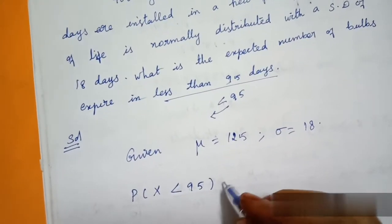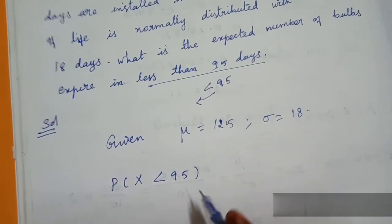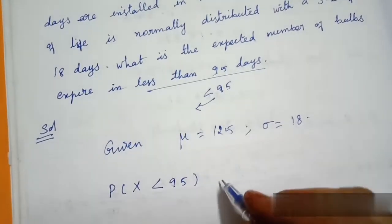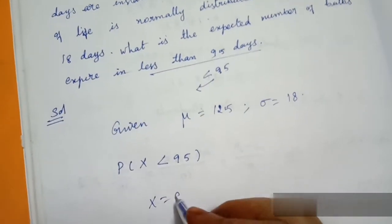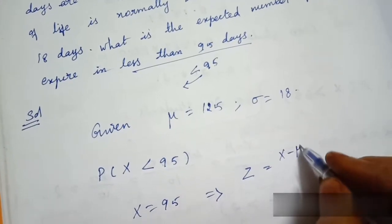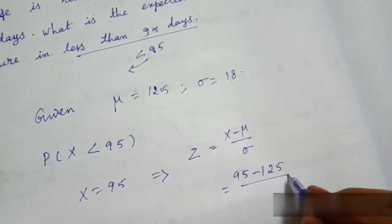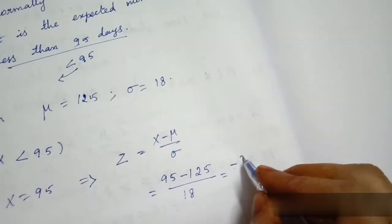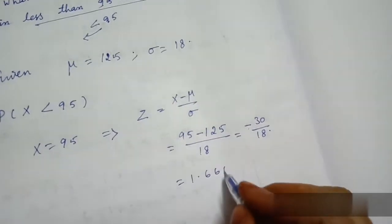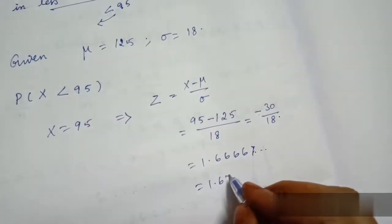For the normal distribution we use the Standard Normal Variate. Z = (X − μ) / σ. With X = 95, μ = 125, and σ = 18, we get Z = (95 − 125) / 18 = −30 / 18 = −1.6667, which rounds to −1.67 to two decimal places.